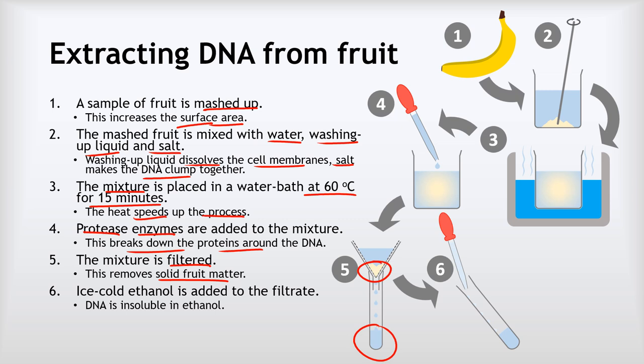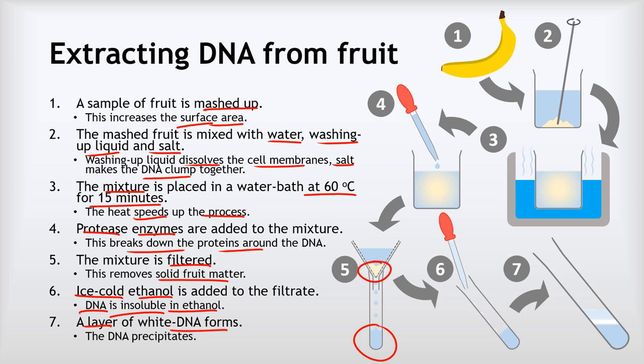The next thing we do is we very carefully—and this is probably the hardest step—very carefully we pour in some ice cold ethanol at an angle to stop the water and the ethanol from mixing too much. The reason we do this is because DNA, although it's soluble in water, is insoluble in ethanol. If we do this right, we get a layer of white DNA forming where the ethanol and the water meet. That is a precipitate of DNA. You can see the ethanol layer, the lower blue part is the water layer, and that white bit is our precipitated DNA.